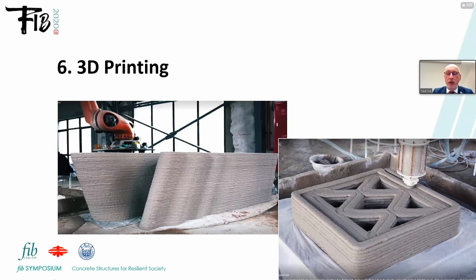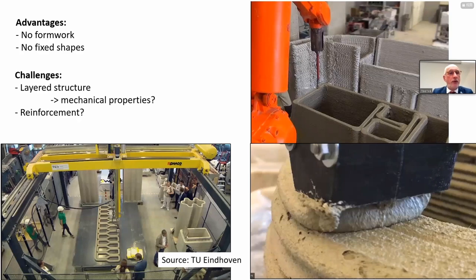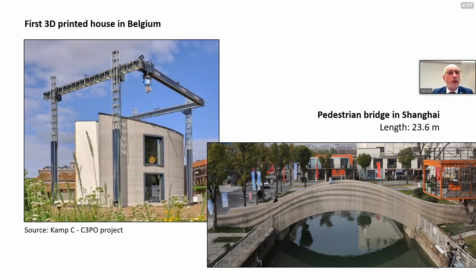3D printing has now become common practice in many places around the world, although mainly limited to demonstration projects. Advantages are that we don't need formwork anymore and that we are not limited to fixed shapes. Of course, some challenges still need to be solved — because of the layered structure, what about the mechanical properties? How to introduce reinforcement in a proper way? Applications include the first 3D-printed house in Belgium, and to the right a pedestrian bridge in Shanghai — a 3D-printed bridge.